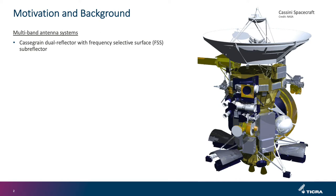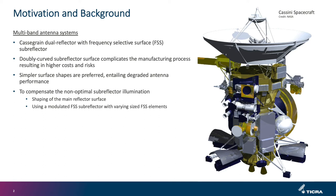As we know, multiband antenna systems are widely used for space applications. A popular example is the Cassini spacecraft, where the high gain antenna consists of a Cassegrain dual reflector system with a frequency selective subreflector. The FSS subreflector separates the different frequencies and thereby provides the multiband operation of the antenna. Now, the subreflector in these Cassegrain dual reflector systems is often doubly curved, and this complicates the manufacturing of the FSS subreflector, giving higher costs and risks.